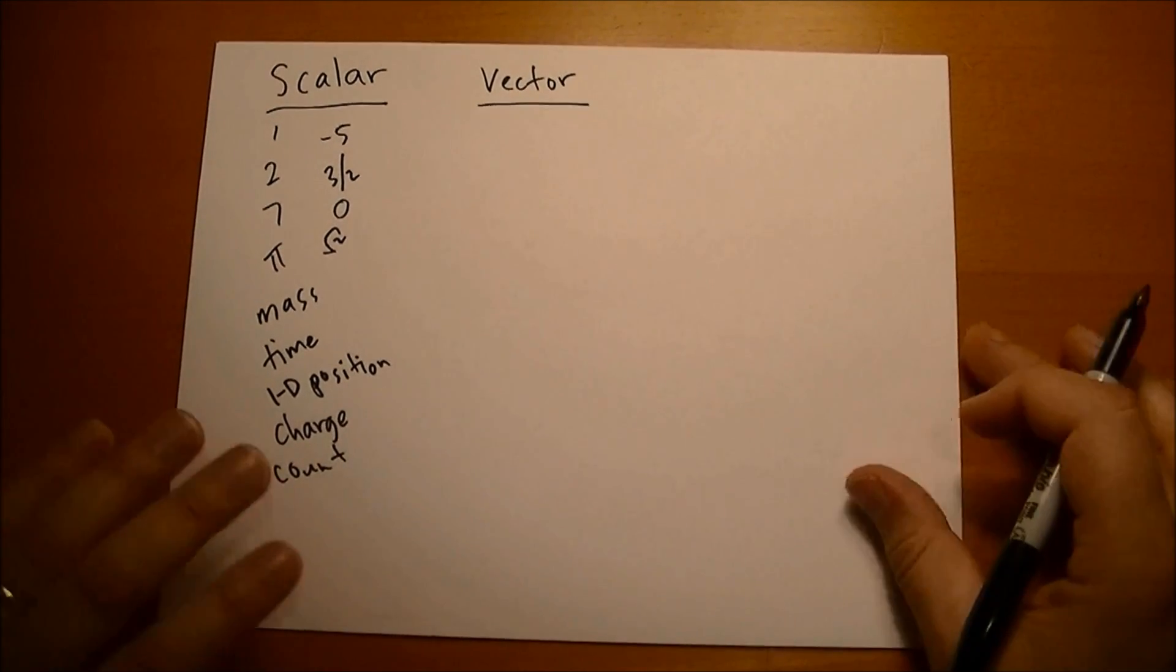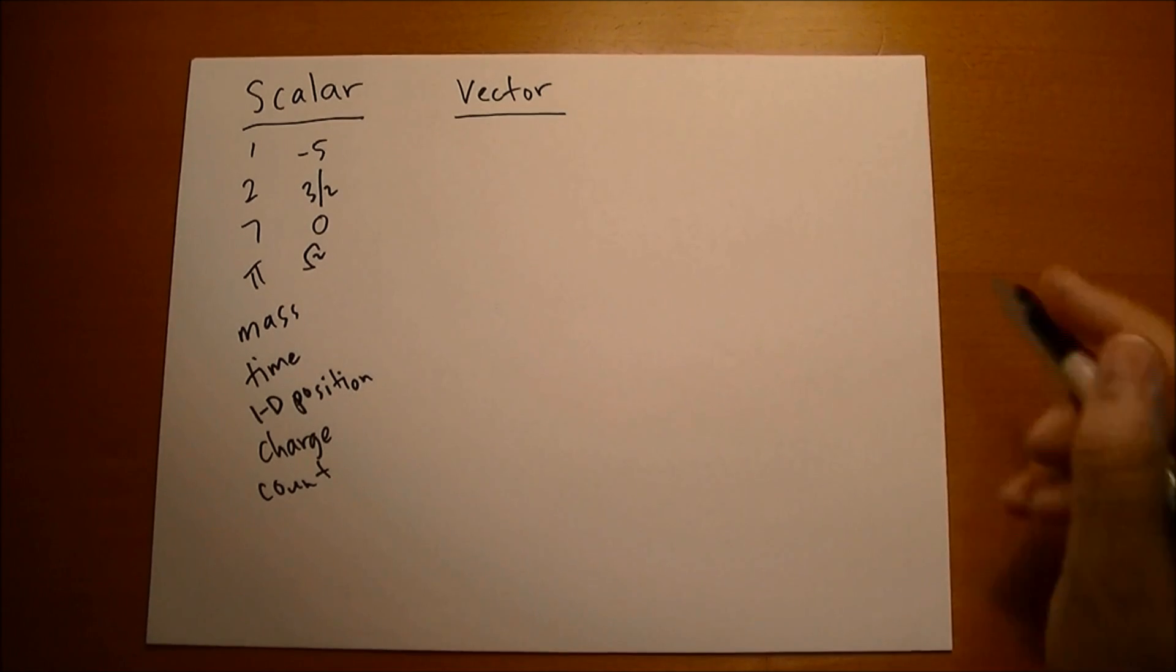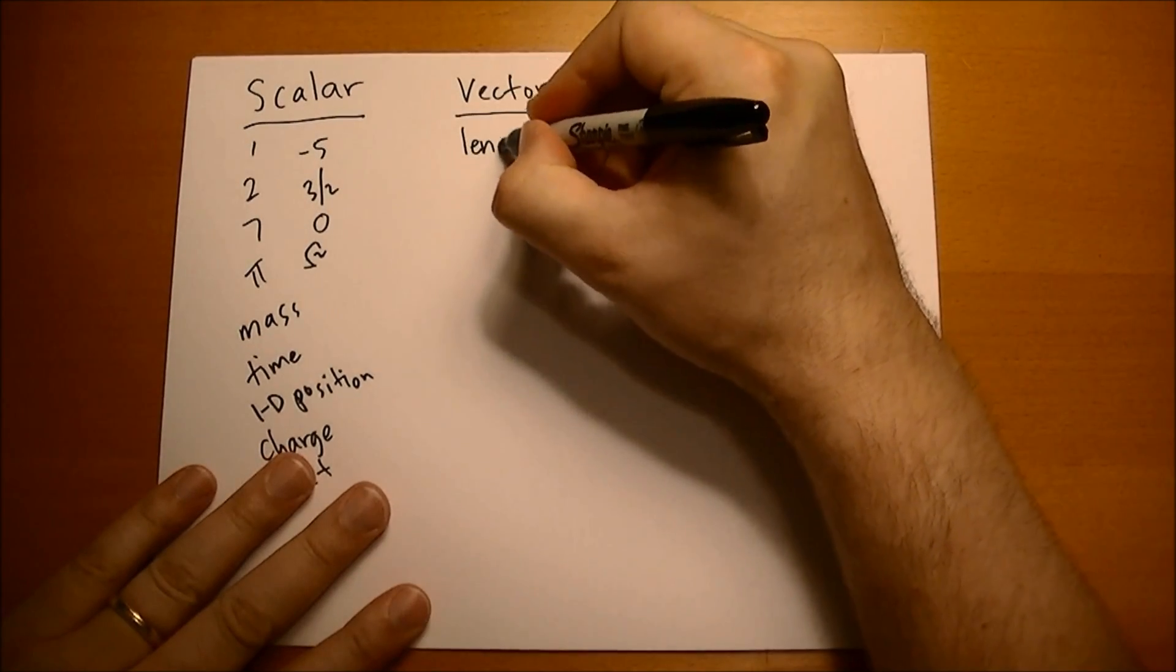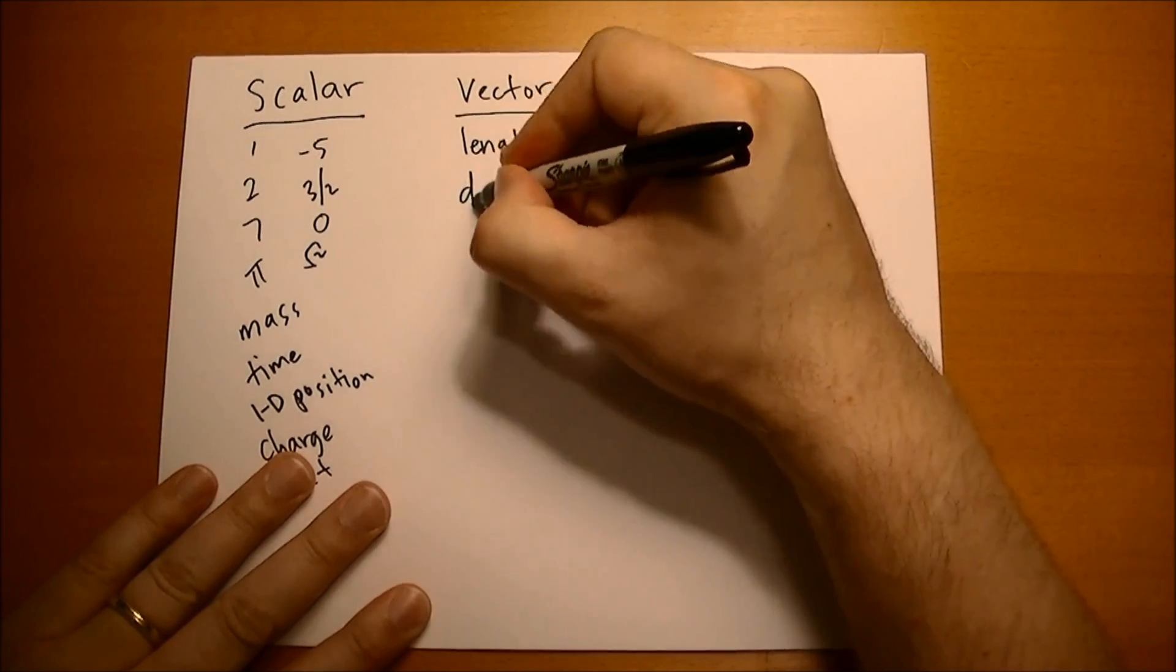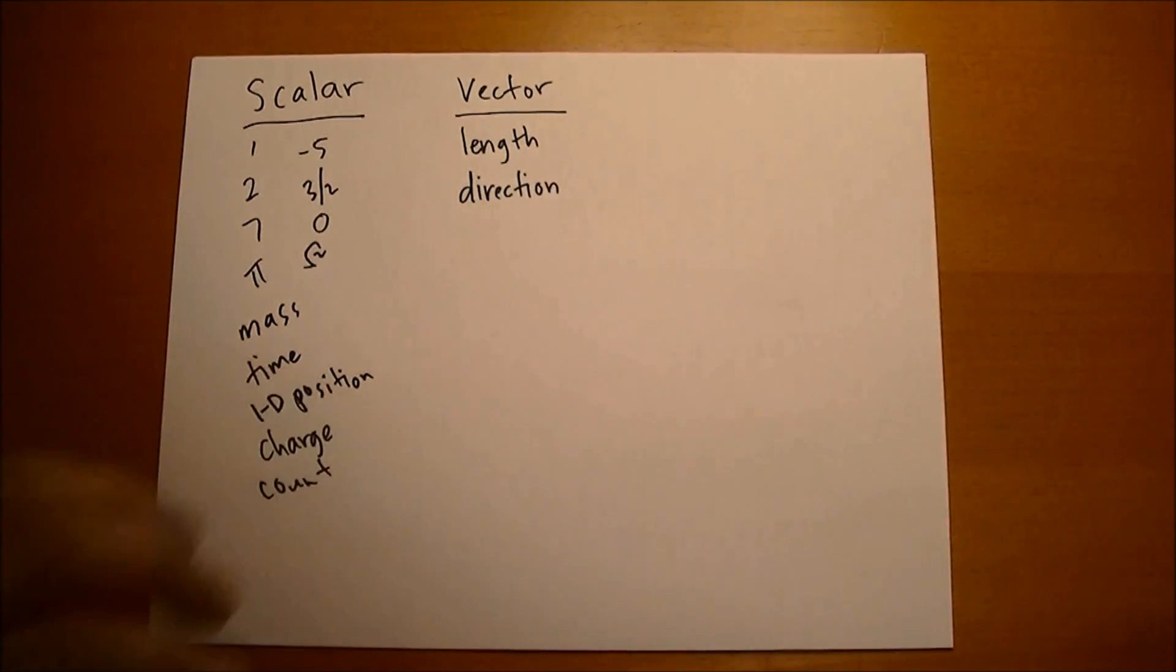You learned about the component form first. A vector isn't just three numbers, it's anything. A vector is a length and a direction. What are some things in real life that are vectors? Well, displacements. If you walk a hundred meters north, that's a vector. If you want to find how far it is from the earth to the Sun, that's a vector because it's a length and a direction.